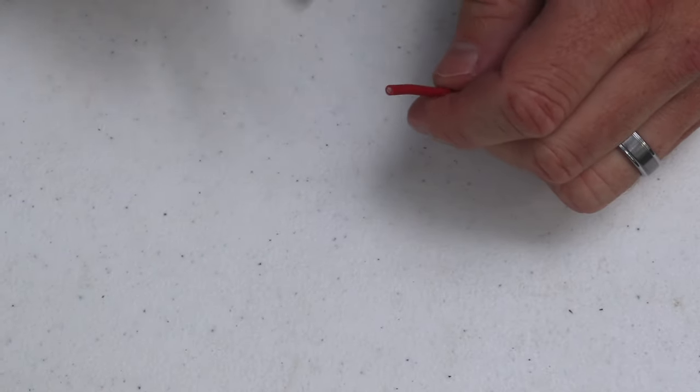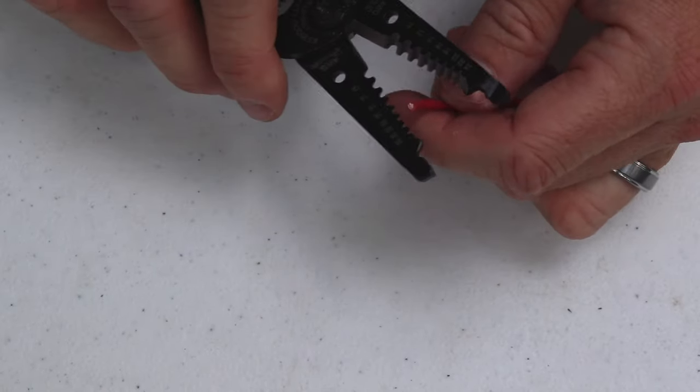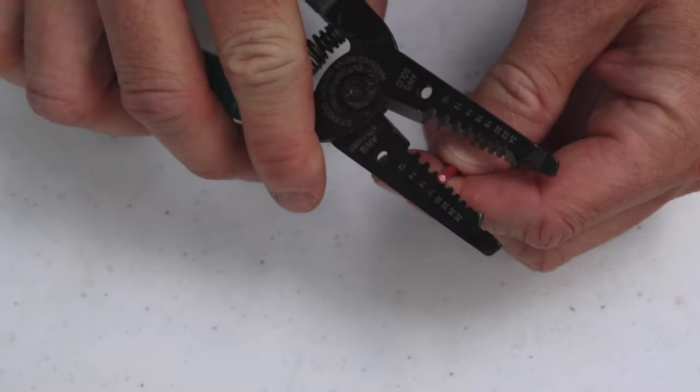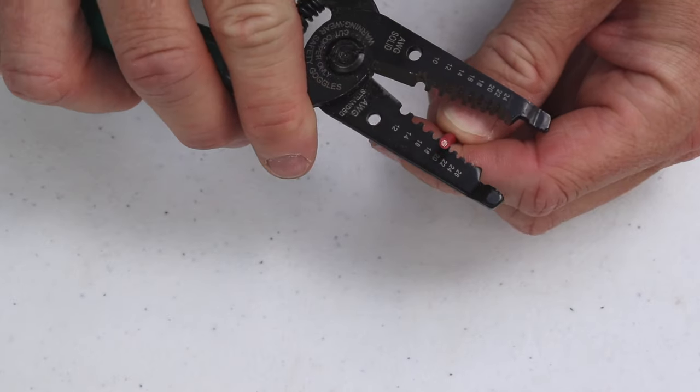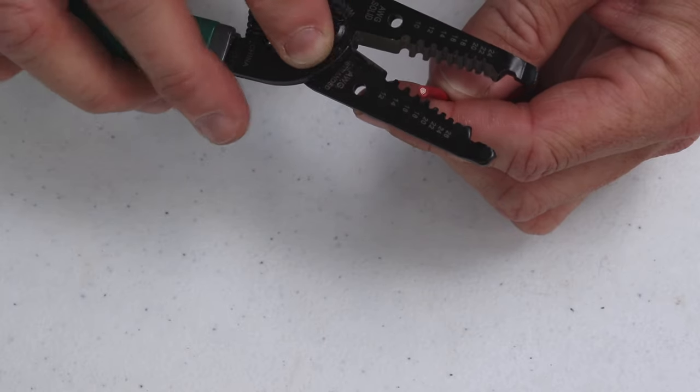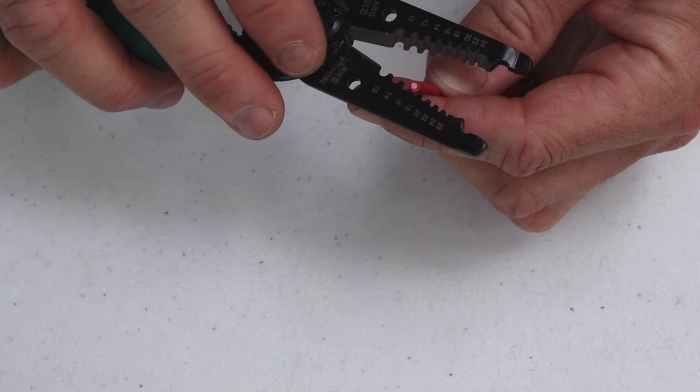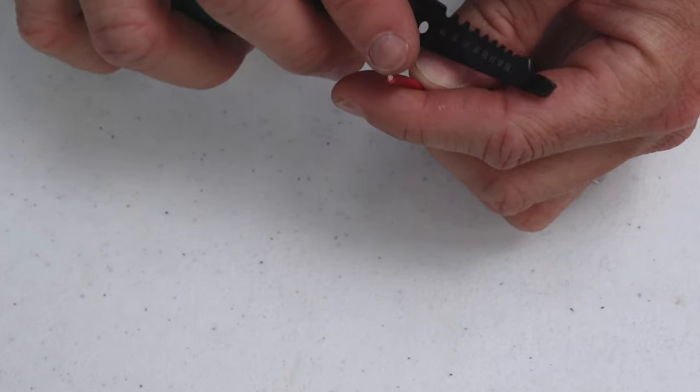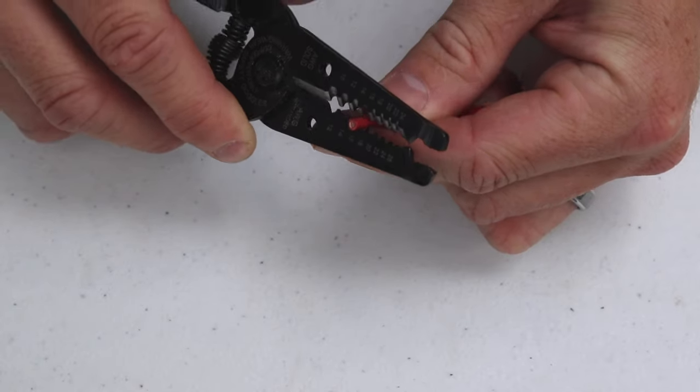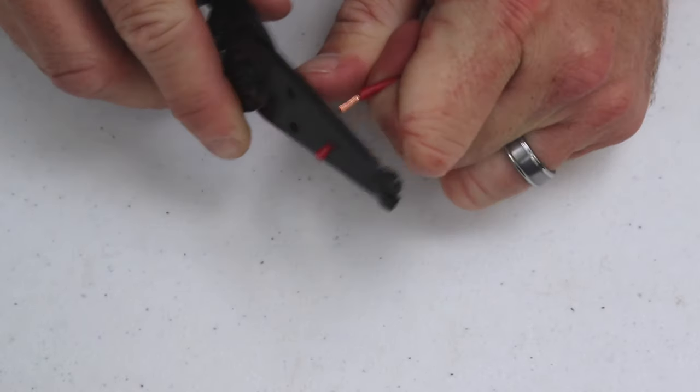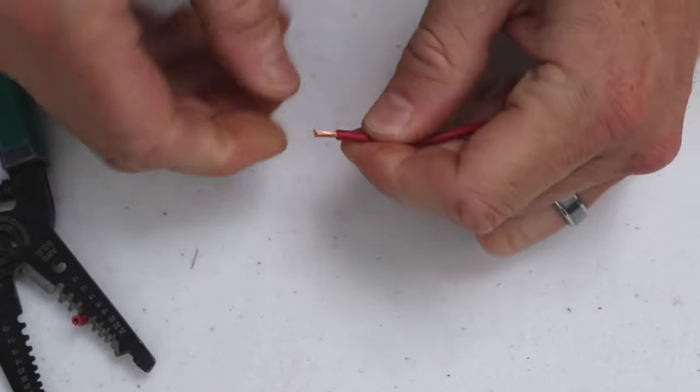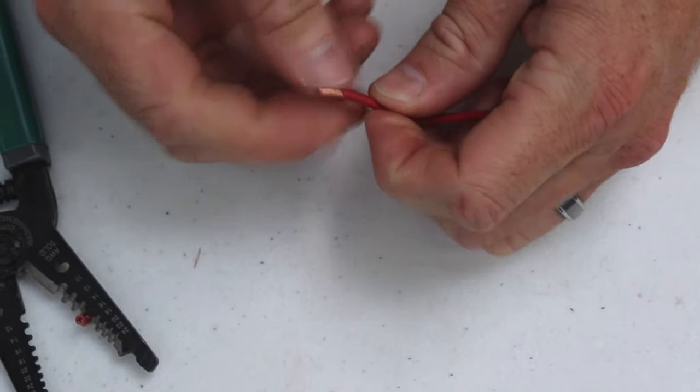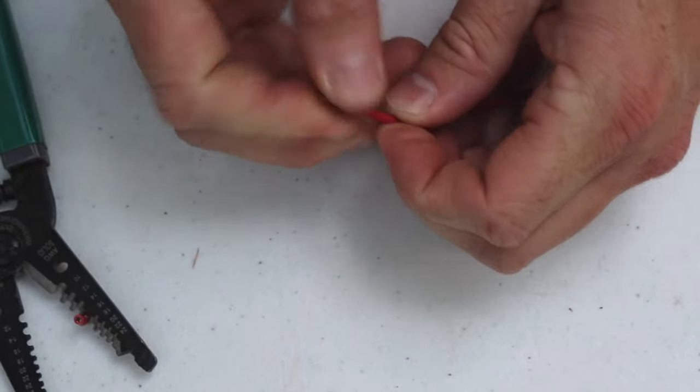Now this is an 18 gauge wire so we're going to want to go to the 18 gauge notch under stranded. There's another side for solid but make sure you use the stranded side if you're using stranded wire. Then we'll cut off about a quarter inch and give it a little twist to keep the strands from separating.